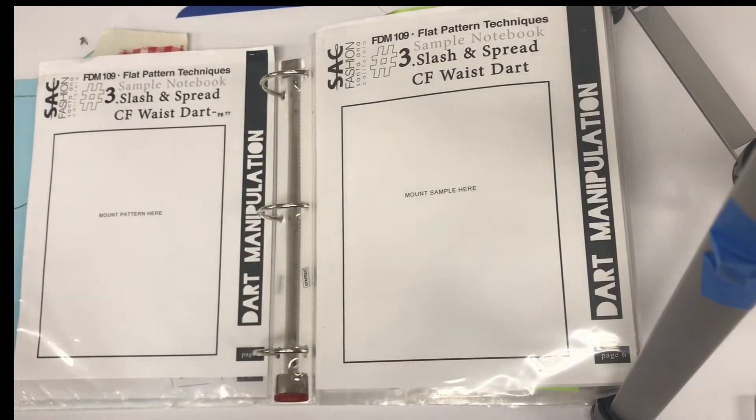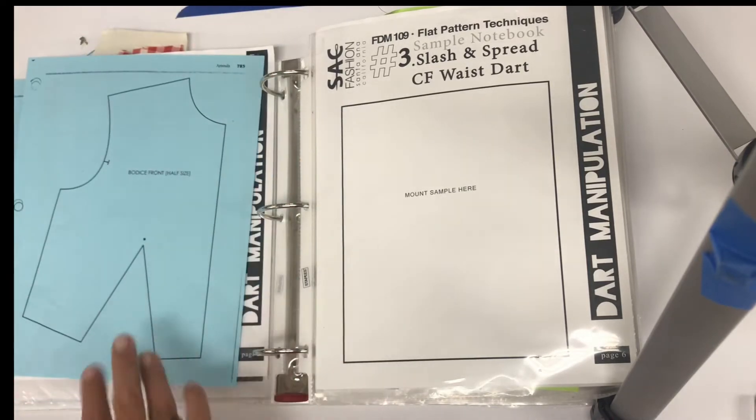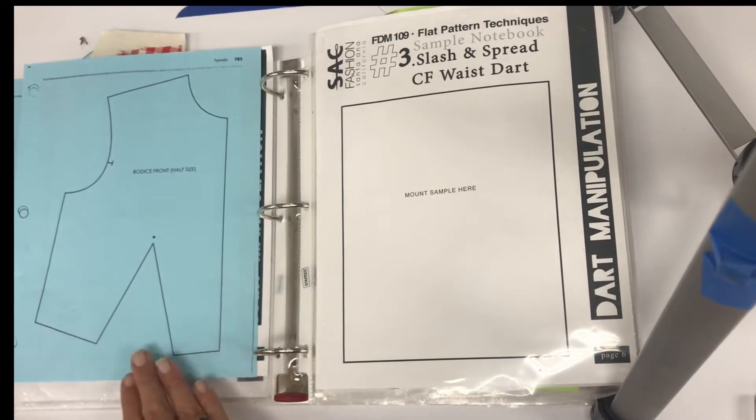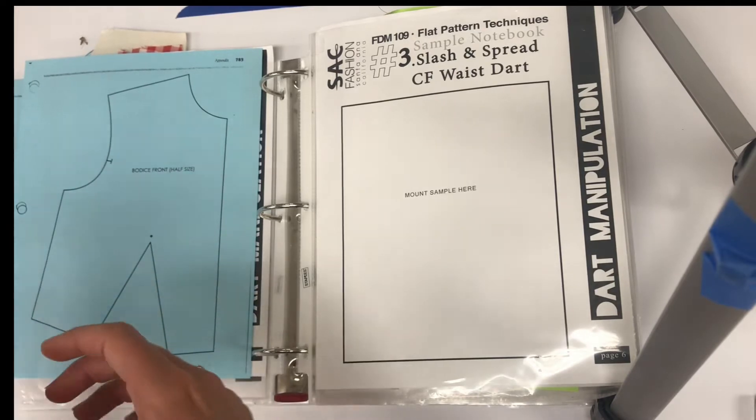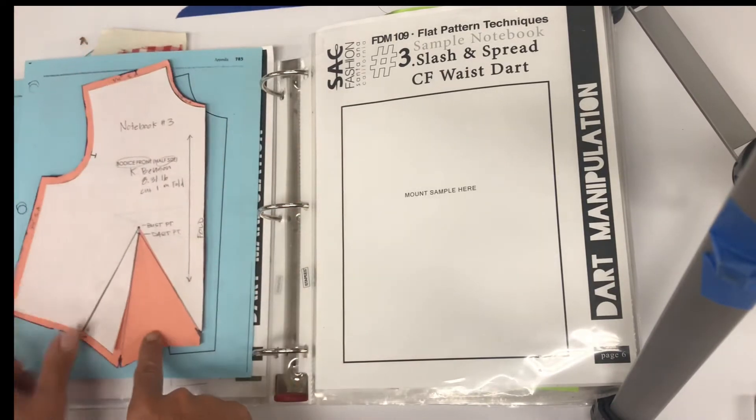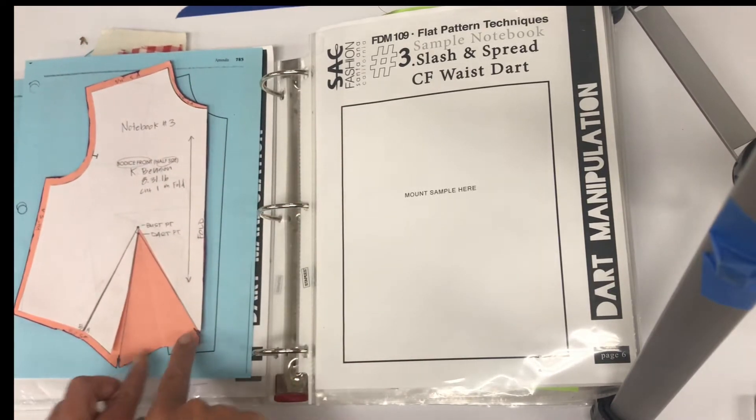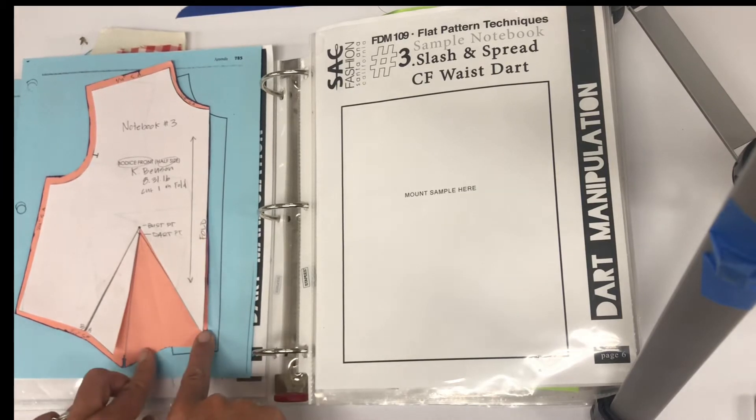For notebook sample number three, we are going to move our dart so that it is placed at the center front waist. So basically we'll start with our basic sloper where our dart is at the waist but it's not at the center front waist, and we're gonna move this dart so that it is closed at the corner here at the waist.